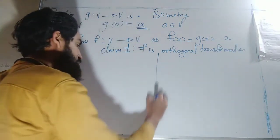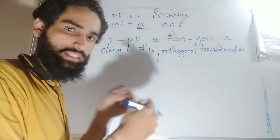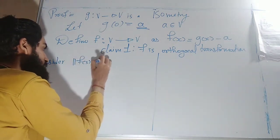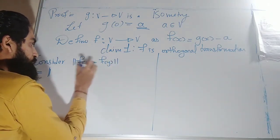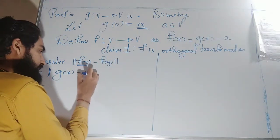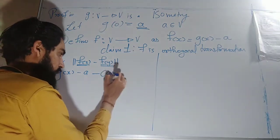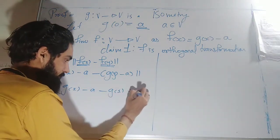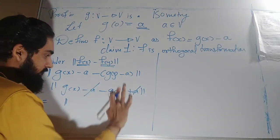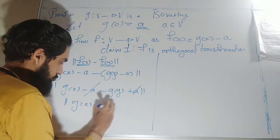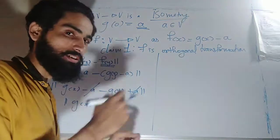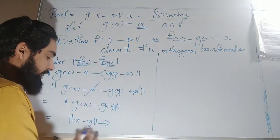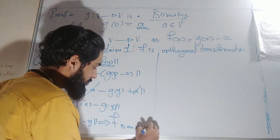I will prove this in two parts: first I will prove it preserves distance, second I will prove it preserves the origin. For the first part, consider ‖f(x) − f(y)‖. By definition, f(x) = g(x) − a and f(y) = g(y) − a, so this equals ‖(g(x) − a) − (g(y) − a)‖ = ‖g(x) − g(y)‖. Since g is an isometry, this equals ‖x − y‖. Therefore f is an isometry.